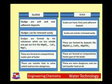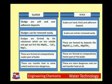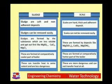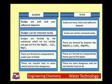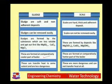Sludges are formed by substances that are less soluble and precipitate out, like magnesium sulphate, calcium chloride, and magnesium chloride. Scales are formed due to specific chemical reactions in the boiler, such as magnesium silicate formed due to presence of silica, calcium sulphate whose solubility lowers down, and magnesium hydroxide formed due to hydrolysis of magnesium chloride. Sludges form at comparatively colder regions of the boiler like inlet or outlet pipes.